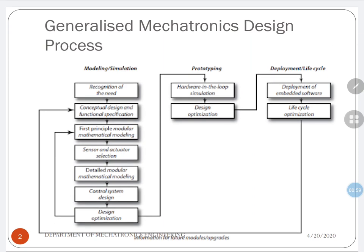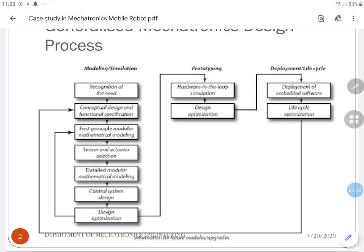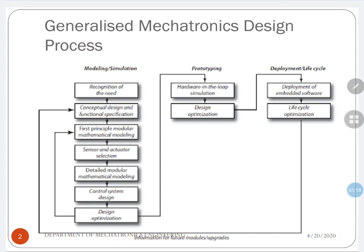This is the generalized mechatronic design process which mechatronics engineers would have come across in various books. The first step is modeling and simulation, which covers the detailed software model and its simulation. Then comes prototyping — hardware-in-loop simulation — where hardware is included in the simulation. Then the design is optimized, followed by final deployment.